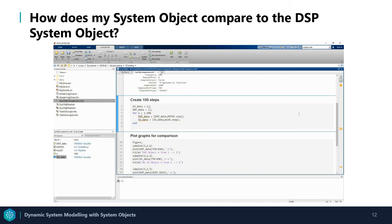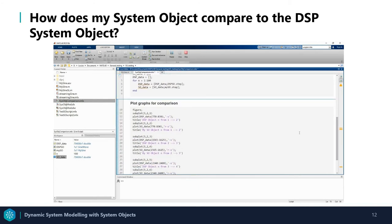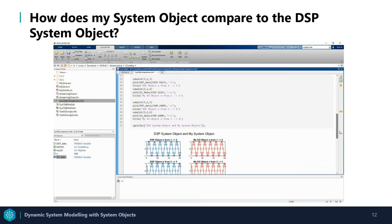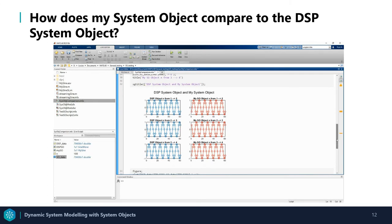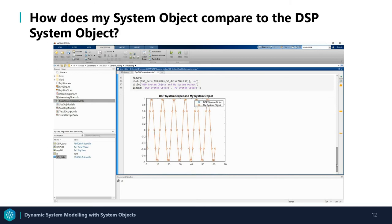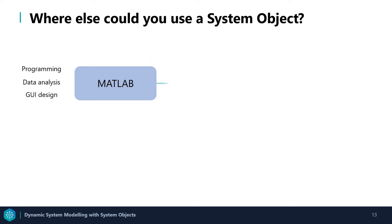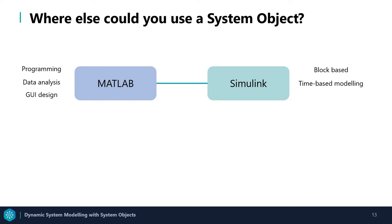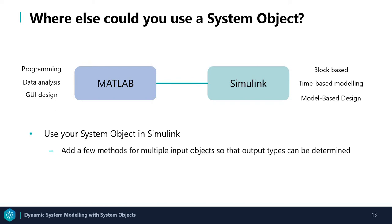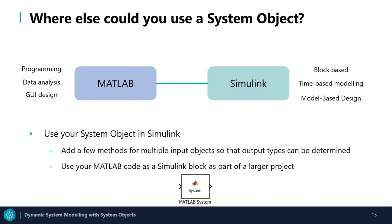What I've also done is plotted graphs to show a comparison of the two. The first is a side-by-side subplot showing the DSP system object and my system object — you can see that the two are similar, with the DSP on the left and my system object on the right. The second plot shows my system object with the DSP system object overlaid on top of each other, and you can see that the results are the same, showing that I've managed to produce a system object that produces the same outputs. So where else could you use these system objects? Simulink is a block-based, inherently time-based modeling environment and a key component of the model-based design workflow. By adding a few methods so that the Simulink solver can determine the output type, you can use the MATLAB System block to incorporate your MATLAB code into a Simulink model as part of a larger project.